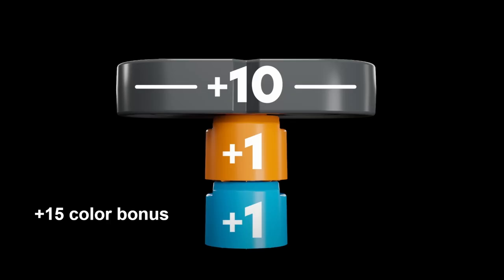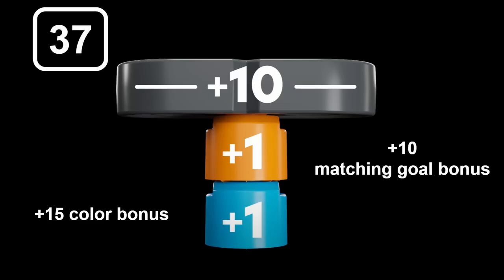Beams can also help form stacks of three scoring objects. Since the beam's gray is the third color, that means this stack gets 15 points for the color bonus. And it gets that extra 10 points as a matching goal bonus, bringing the total here up to 37 points.